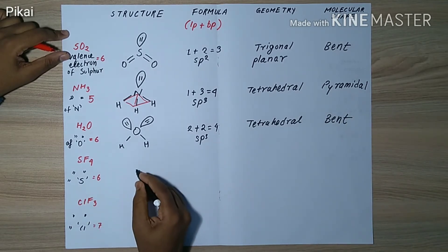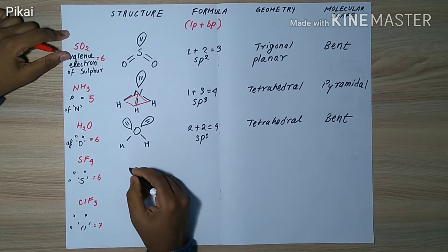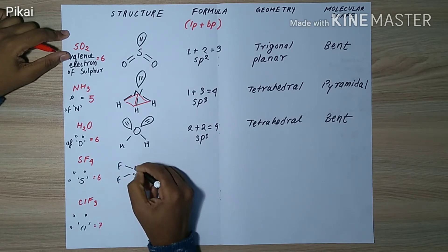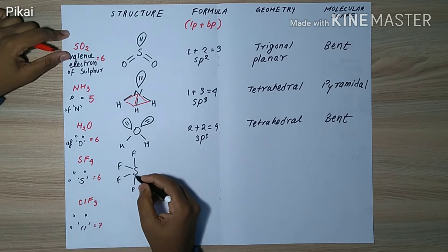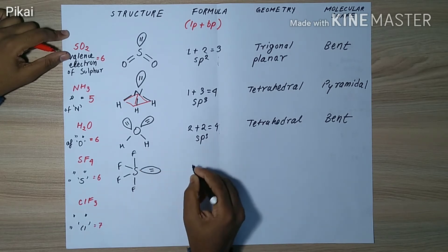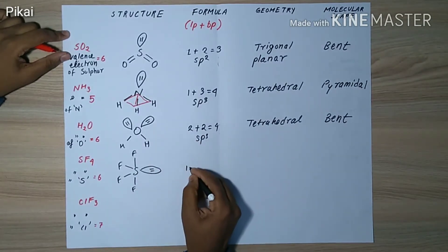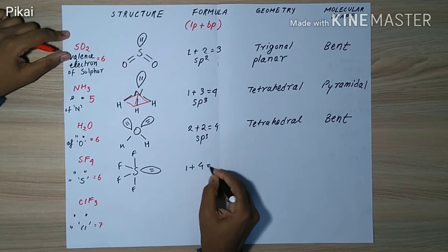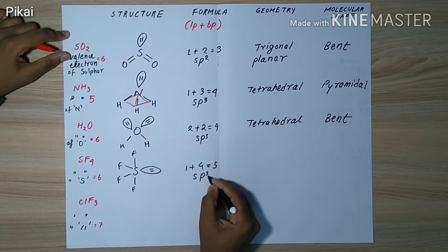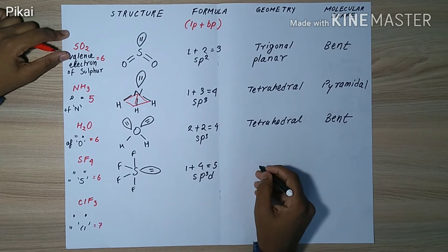In the case of SF₄, sulfur is the central atom with six valence electrons. It forms four bond pairs with four fluorine atoms, and we still have two electrons left, which form one lone pair. From the formula, lone pair plus bond pair — one lone pair plus four bond pairs gives five.